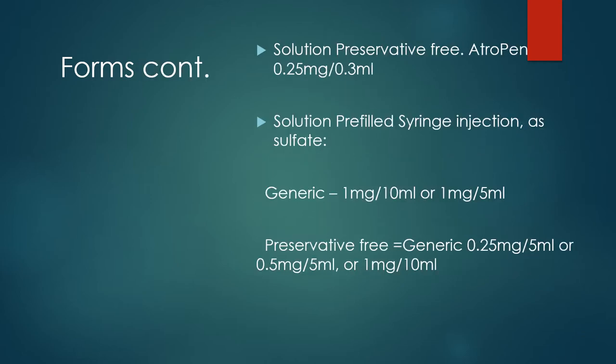It is also available as a preservative-free solution at 0.25 mg per 0.3 mL. Pre-filled syringe injections as the sulfate under the generic name come at 1 mg per 10 mL or 1 mg per 5 mL. Preservative-free pre-filled syringes are available at 0.25 mg per 5 mL, 0.5 mg per 5 mL, or 1 mg per 10 mL.